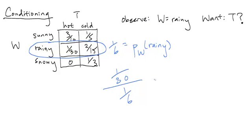As we did this calculation, now we see that this is equal to the probability that W is equal to rainy and T is equal to hot. So rainy, hot, divided by probability W being equal to rainy.